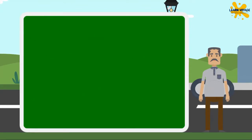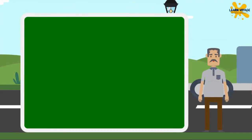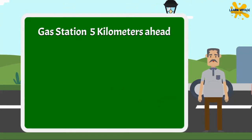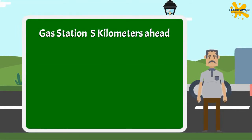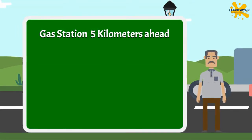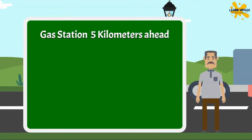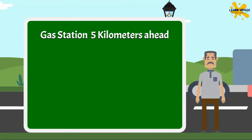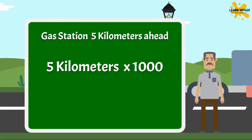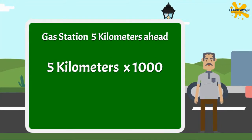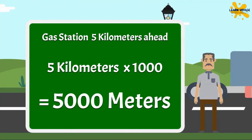Isn't it simple? Now you try it. If the gas station is 5 kilometers ahead from here, calculate how much it is in meters. Let me help you with the calculations — we multiply 5 kilometers by 1000, and we get 5000 meters.